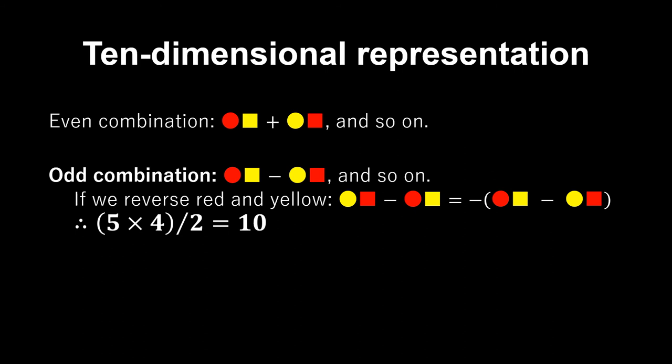We imagine gluing a circle and a square together. The circle and the square are to be colored with one of five possible colors. Since we have five color choices for the circle and five choices for the square, we have 5 by 5 equals 25 combinations or entities.